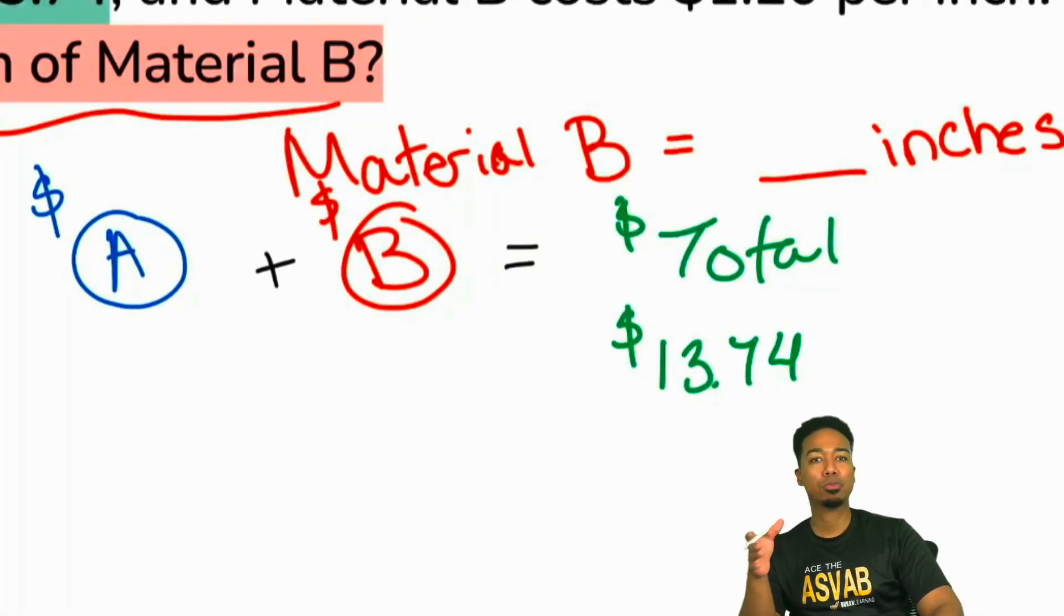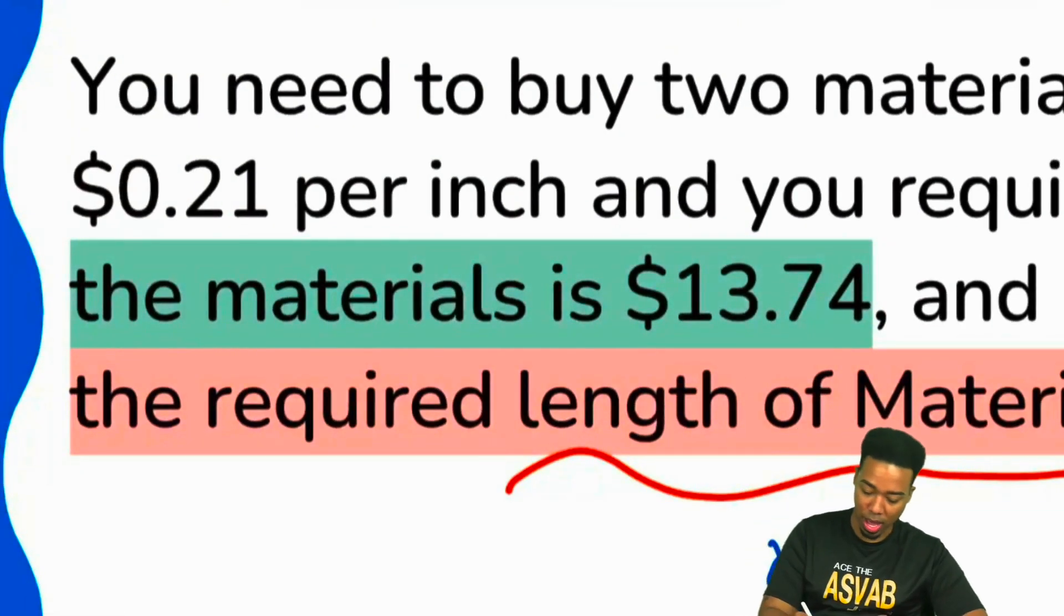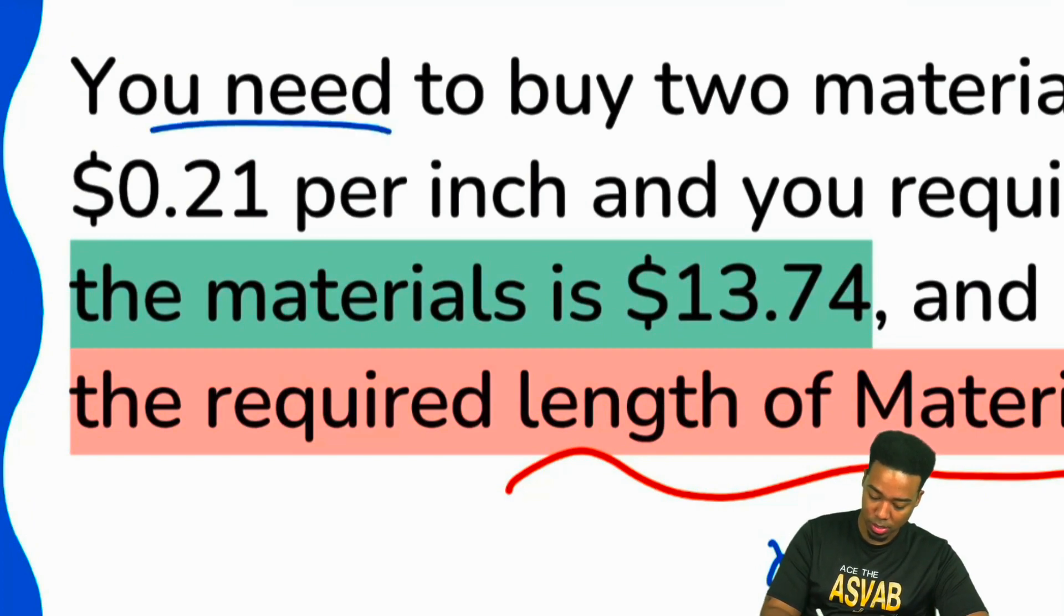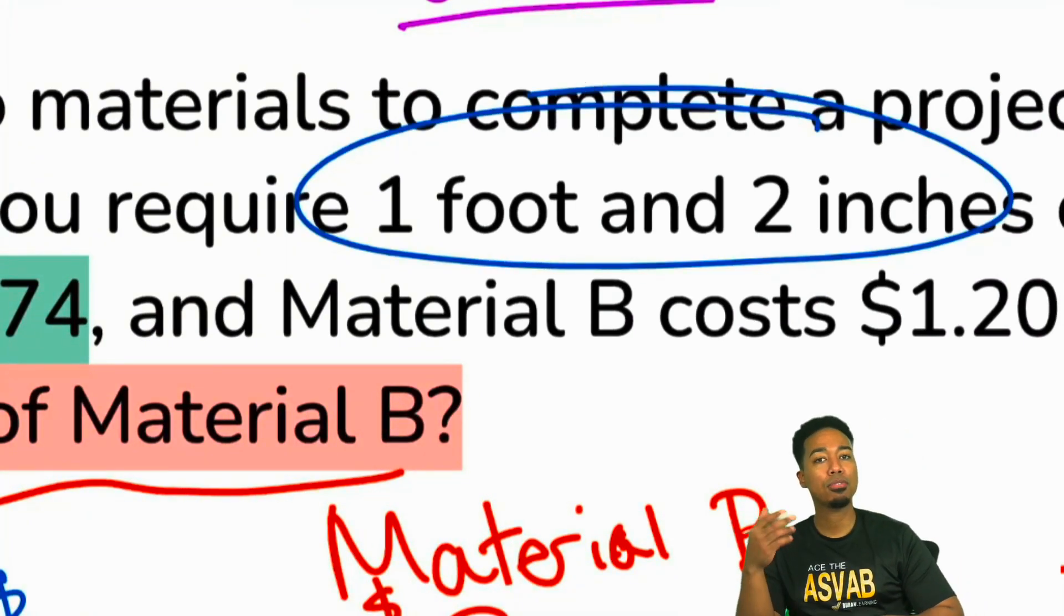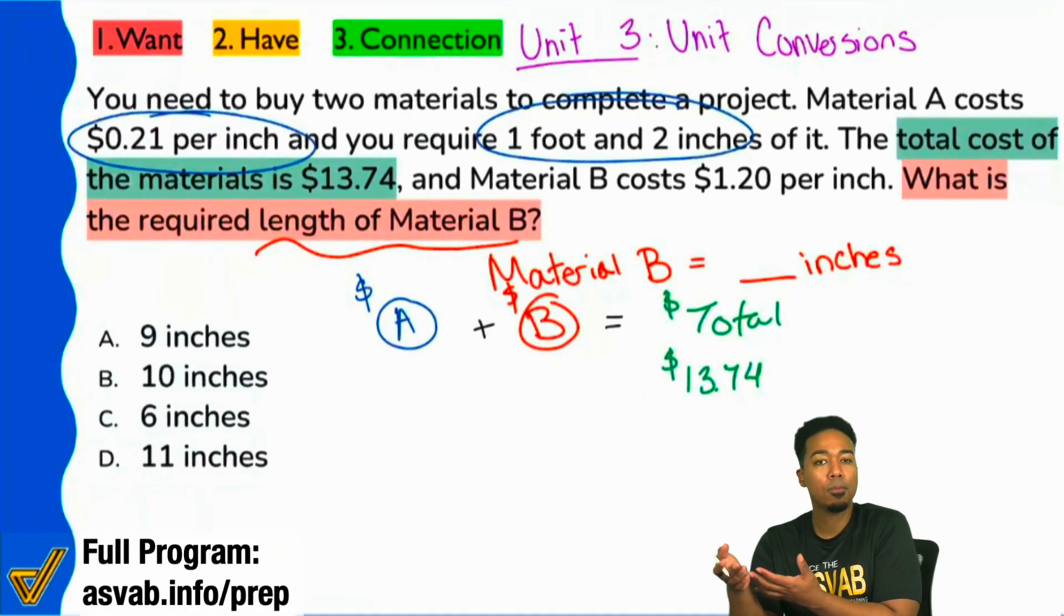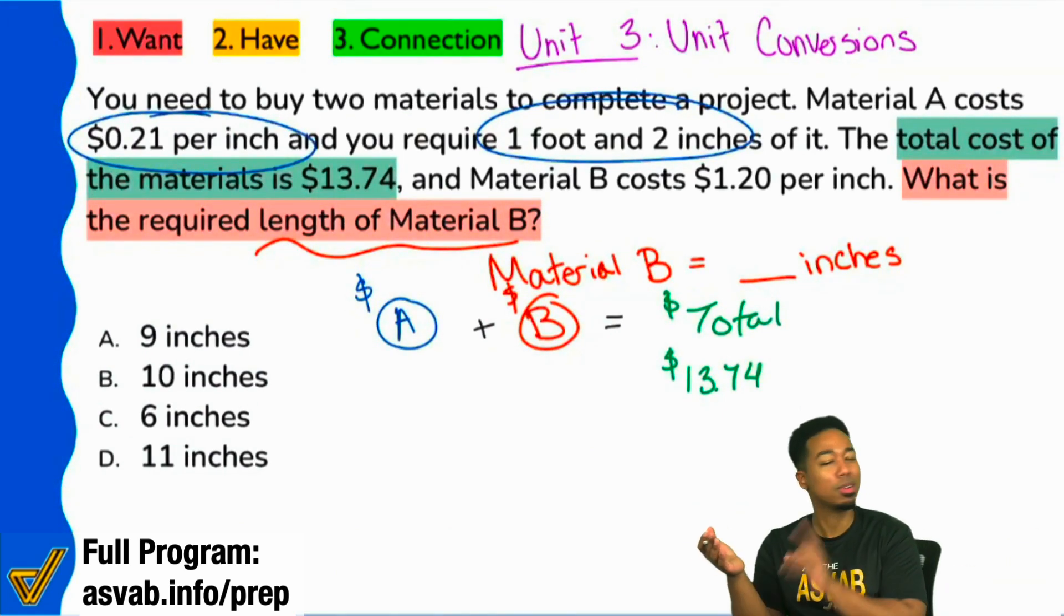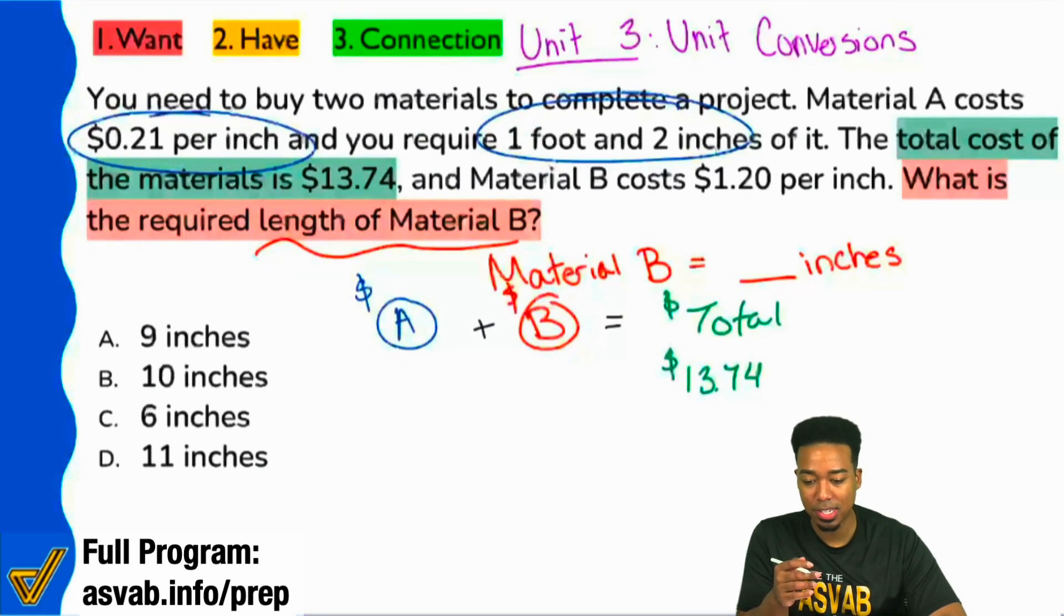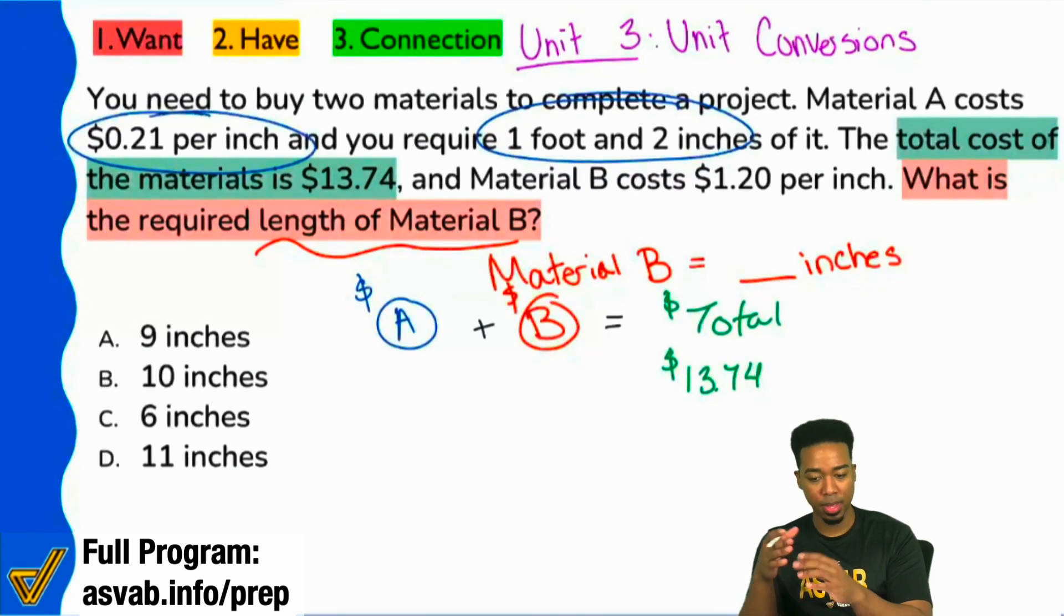That's going to help us keep things simple. We know that this right here is $13.74. However, though, how am I supposed to find the cost of material A or material B? Well, remember, we were shown that we have a cost per inch right over here. Cost per inch and we have this much of it. So how do I find the total cost, everybody? Well, if it's $0.21 per inch, multiply it by the number of inches and you got your cost for material A. Same thing for B, but it's going to be a little different with B.